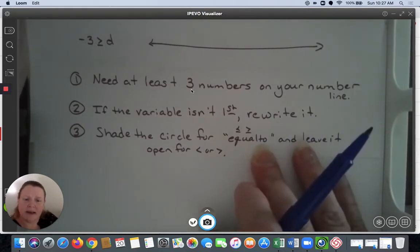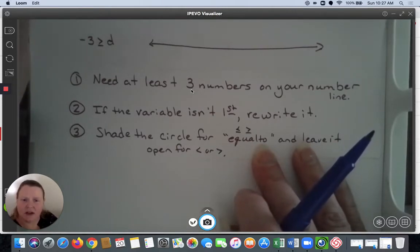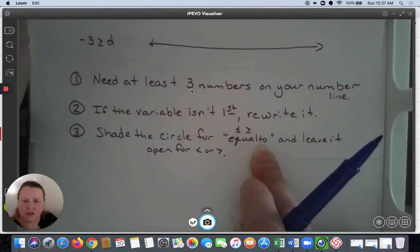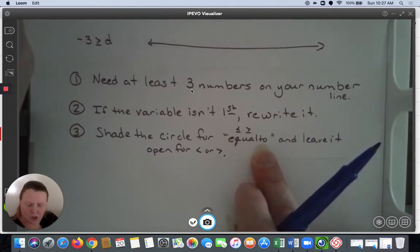My next expectation is that if the variable isn't first, I suggest rewriting it. This will make your life easier. You need to shade appropriately: greater than or equal to and less than or equal to need filled circles, while less than and greater than need open circles.